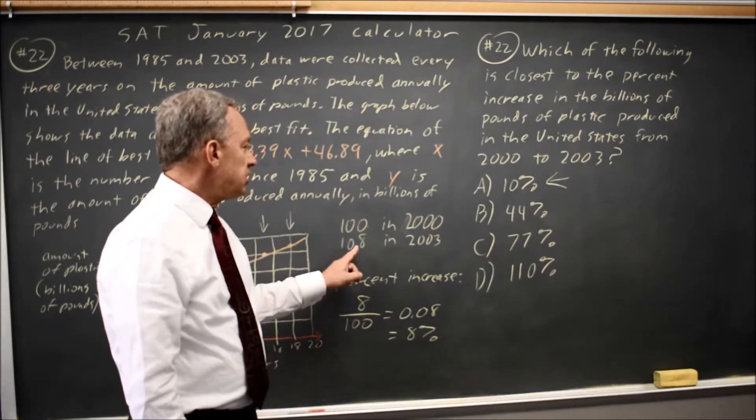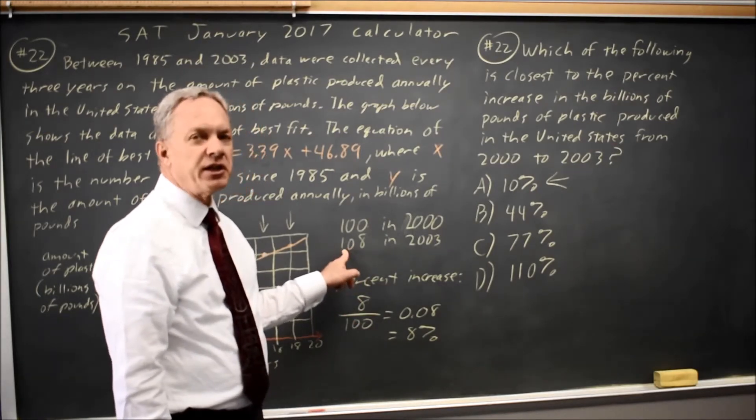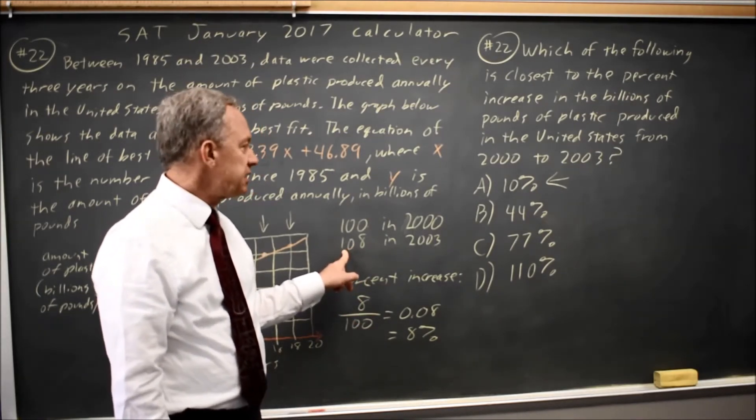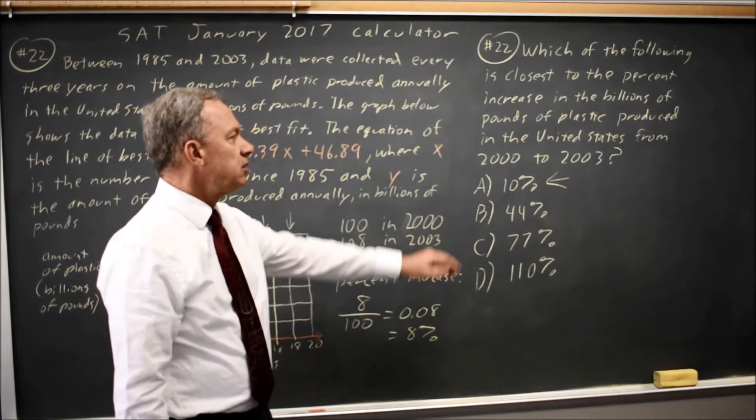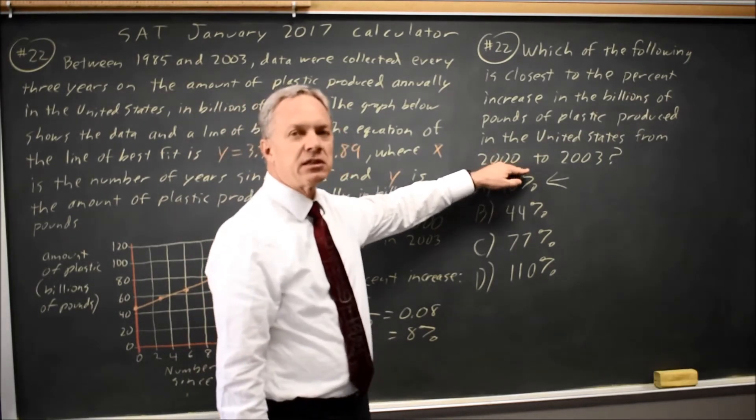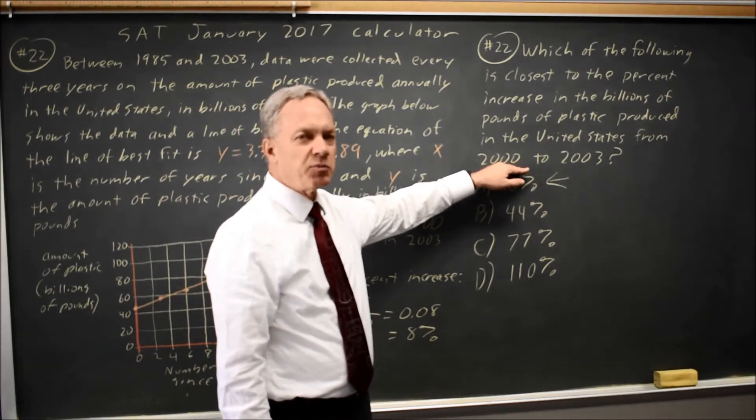Where if you do the amount relative to the second reading, you'll get a different answer. In this case, they weren't looking for that, but they often will, and if you're looking for the increase from 2000, the value in 2000 will be your denominator.